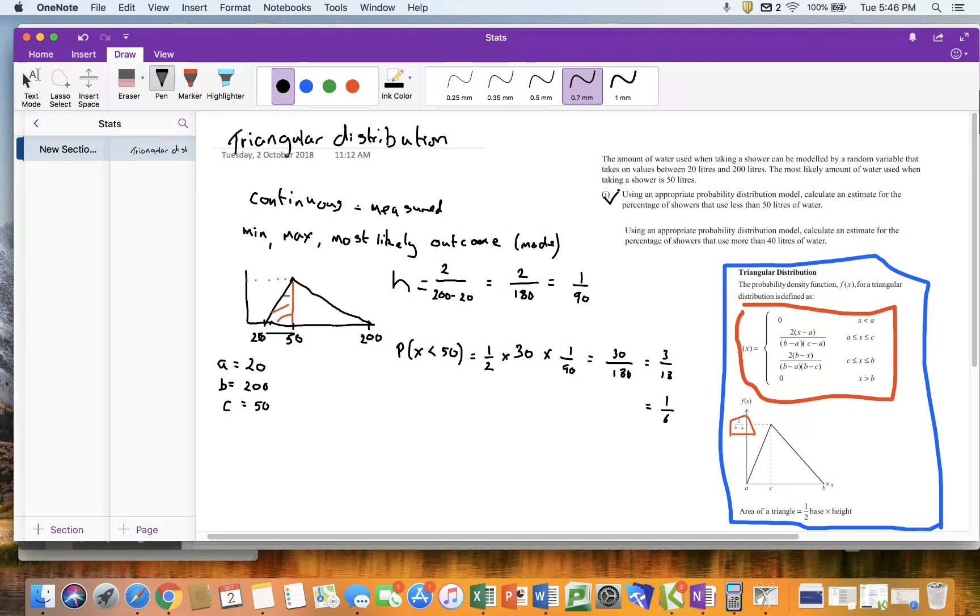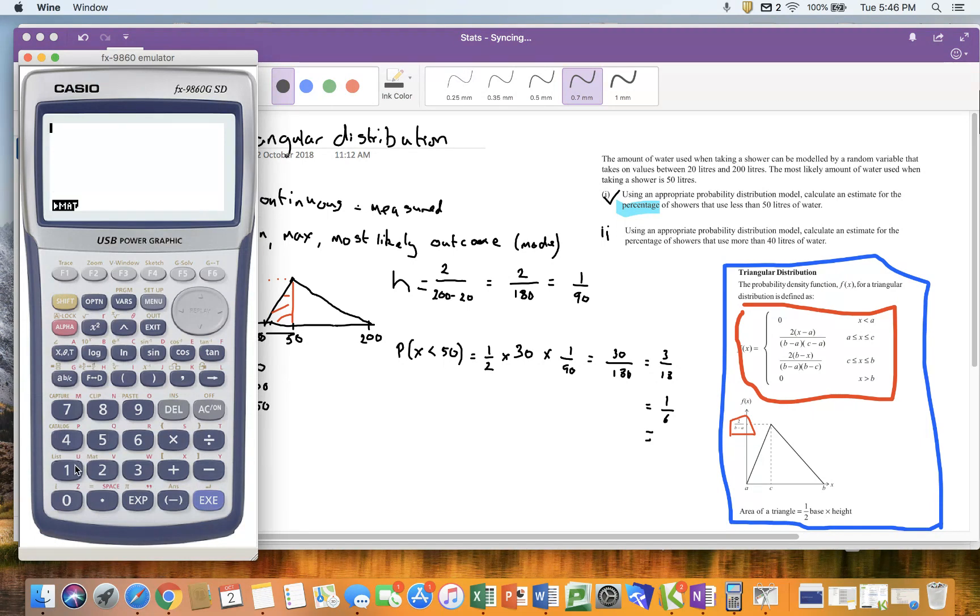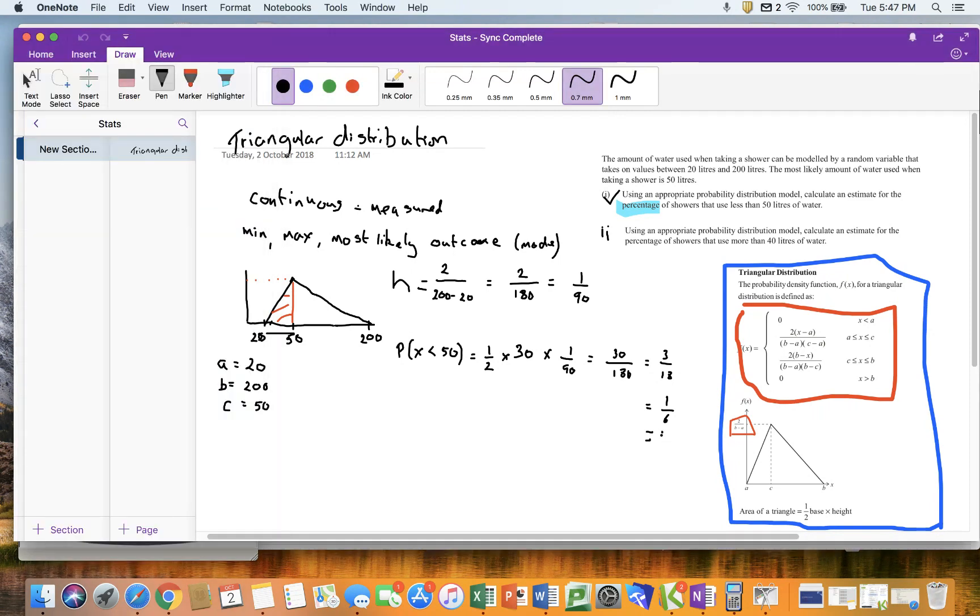So now we can put a tick against using the probability to work out the probability of less than 50 litres of water. The second part, and for some reason I cut off the double I, I now need to work out, work out an estimate of the percentage of showers that use more than 40 litres. Oh, just spotted something that's really useful, because you need to always read the question. It's asked me for a percentage. I've left my answer as a fraction. That is not going to cut it. So now I need to go right. 1 sixth times 100 is 16.67%. So I need to make sure I actually write the answer in the format they've asked me to do. Now I can put a tick there.